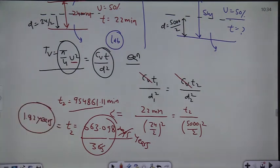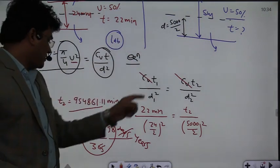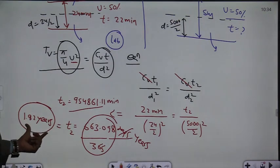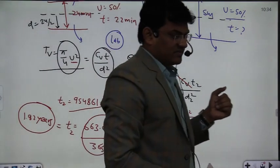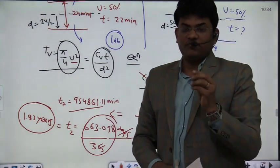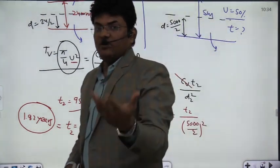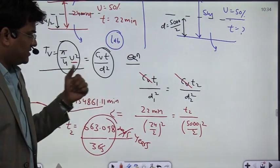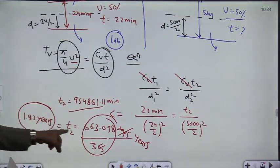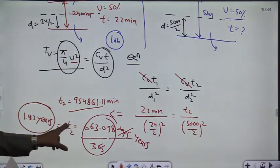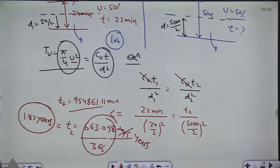So 50% consolidation in that clay field will take 1.82 years. So you can see that the clay consolidation will take this much time to achieve 50% consolidation at the site.